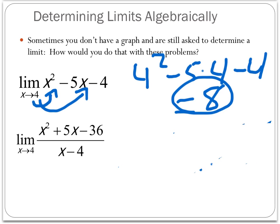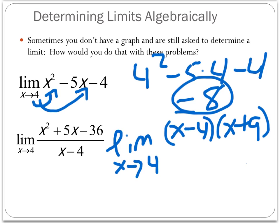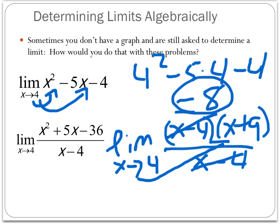Going back to Algebra 1, the numerator looks like it might be factorable. I can write this as the limit as x approaches 4 of (x minus 4)(x plus 9), all over (x minus 4). Notice I can cancel out that factor causing the dividing-by-0 problem. Now I substitute x equals 4 into what's left, so my limit becomes 4 plus 9, which is 13. I've cancelled away the dividing-by-0 problem.